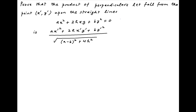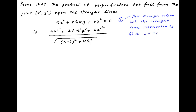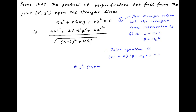Let's denote the given pair of straight lines by equation 1. Note that these lines pass through the origin. Therefore, let's assume that the equations of these two straight lines are y is equal to m1x and y is equal to m2x. Therefore, the joint equation of this pair of straight lines is y minus m1x times y minus m2x is equal to 0. This can be written as y squared minus m1 plus m2 times xy plus m1m2 times x squared is equal to 0. Let's denote this by equation 2.